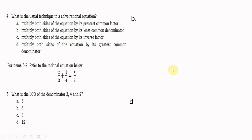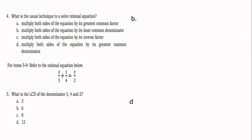Find the LCD and multiply it to both sides of the equation. For items 5 to 9, refer to the rational equation: x over 3 plus 1/4 equals x over 2. Number 5: What is the LCD of the denominators 3, 4, and 2?